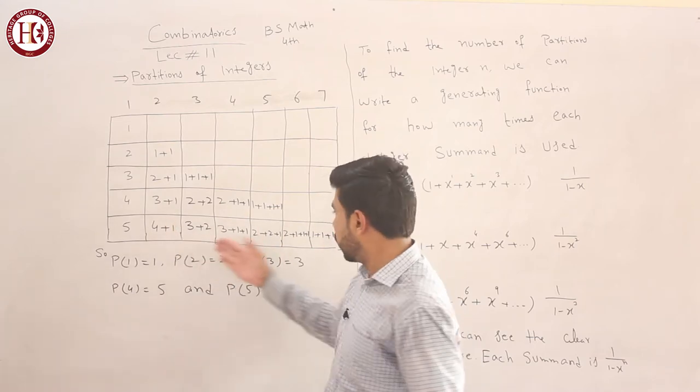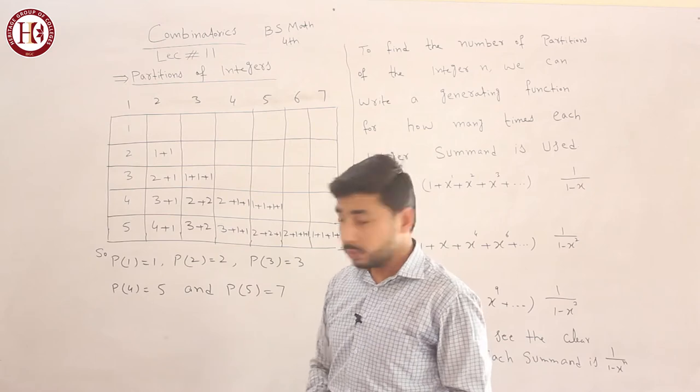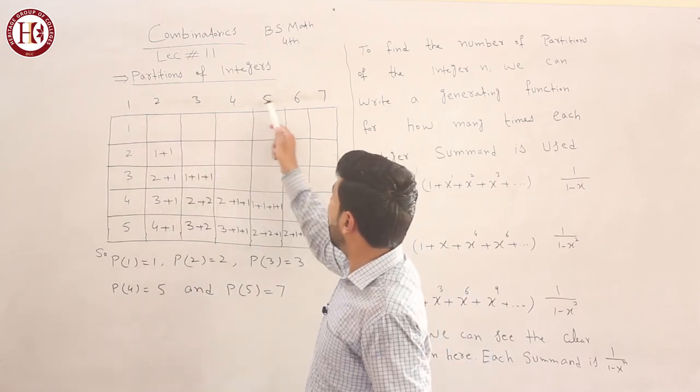You can partition 5 in multiple ways. So you have 1, 2, 3, 4, 5, 6, 7 partitions as we go up.